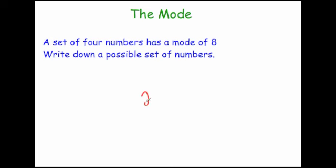So it could be, let's try 2, 8, 8, 9. That set of numbers is 4 numbers: 2, 8, 8, and 9. So it's 4 numbers. And the mode is 8 because 8 happens twice.